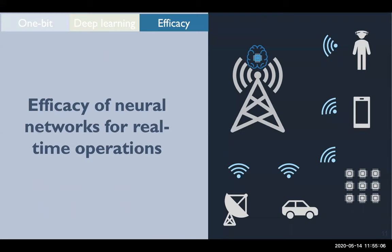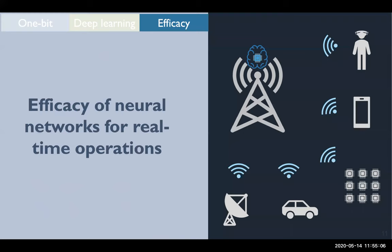So now, the most important question is, how effective are neural network estimators for signal processing? This includes both estimation performance as well as execution time, which is something that neural networks are really not known for.